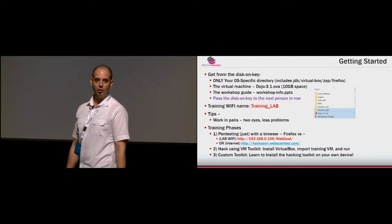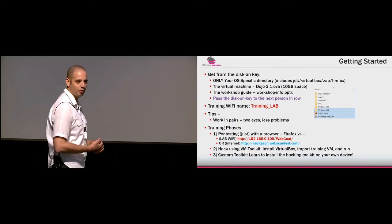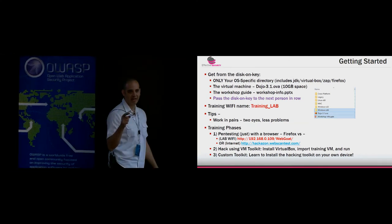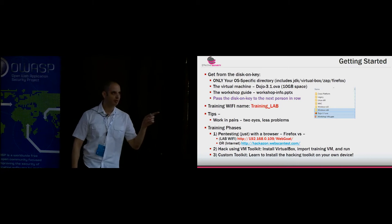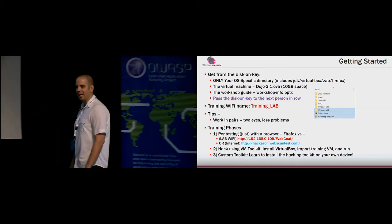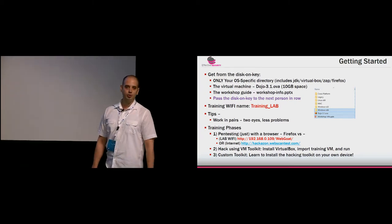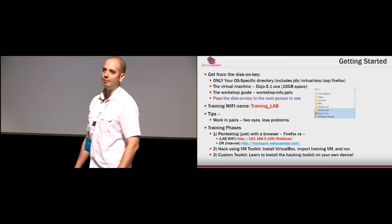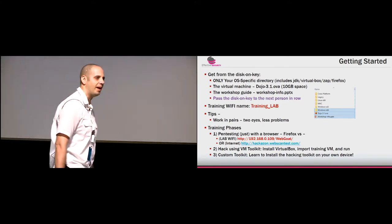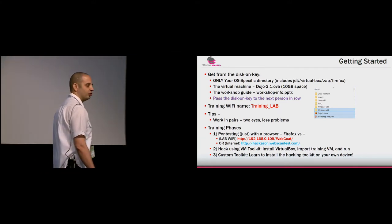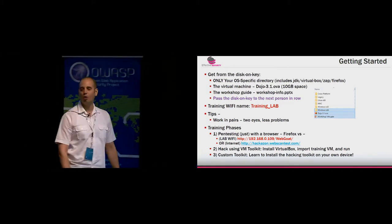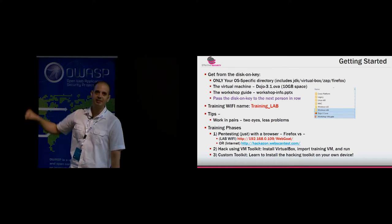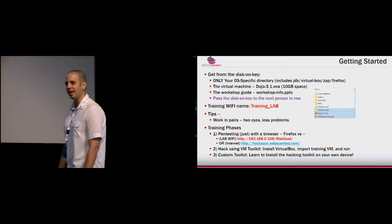We spread some disk keys among you — we really need them back so we can spread them to the rest of the participants. We only have 35 disk keys. Give them back or pass them to the person beside you so they can copy the training lab tool set. In the disk keys there are directories listing the operating system types supported: Windows, Mac, Linux. You need to copy the OVA file in the root of the disk key — that's the main training lab.